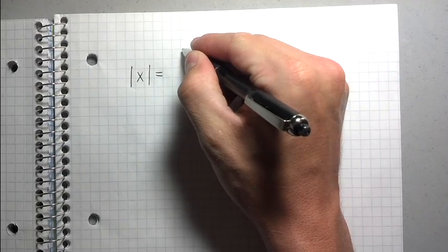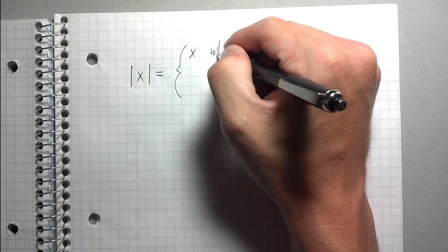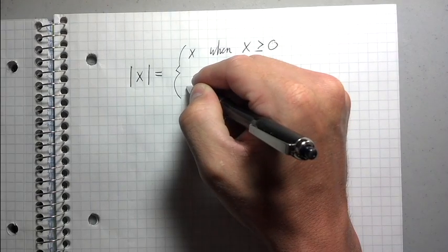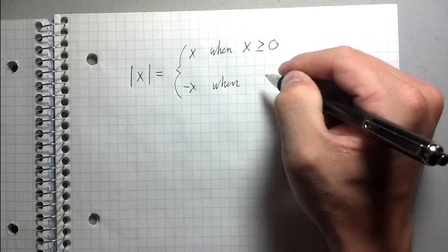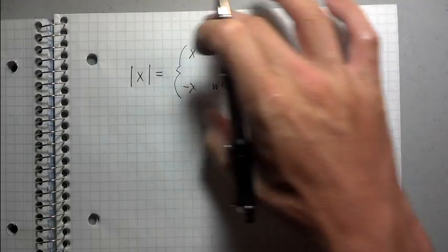So, the absolute value of x equals x when x is greater than or equal to 0, and negative x when x is less than 0. So, this is the formal definition, alright?